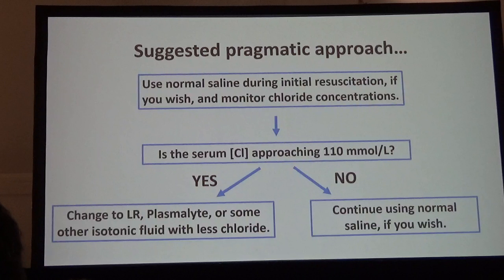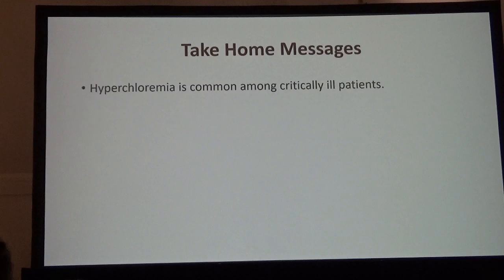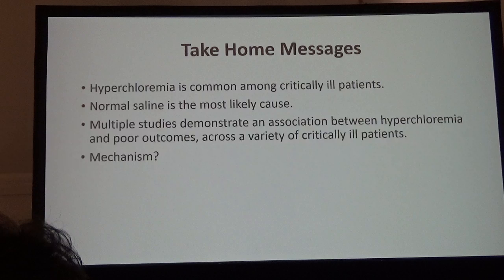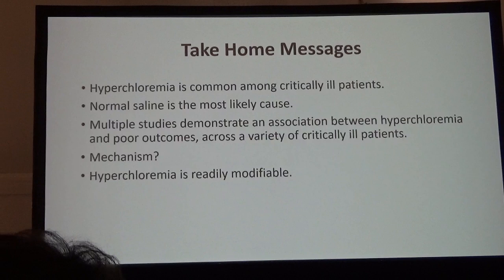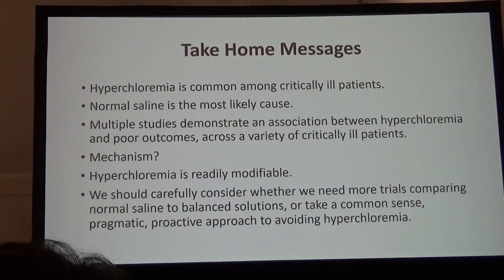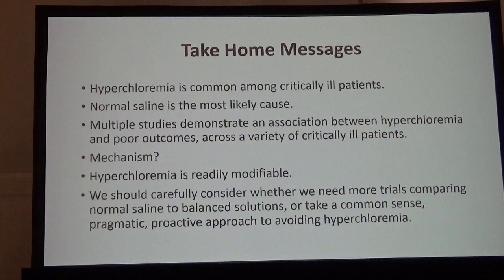Take-home messages: this is a common problem in our patients. Normal saline is the most likely cause. There are now multiple studies demonstrating an association between hyperchloremia and poor outcomes across a variety of patient types, including children and adults. The mechanisms are a bit vague, but the association is strong and compelling. Most importantly, this is something we can modify — so rather than conducting more fluid comparison trials, we should take a pragmatic, common-sense approach: monitor chloride and change the fluids accordingly. Thank you very much.